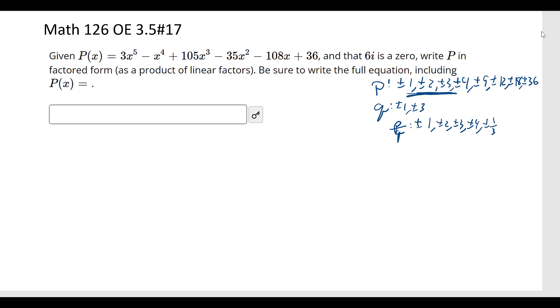1 third, 2 thirds, 3 thirds is 1 we already have that. And 12 thirds is 4, we already have that. 18 thirds is 6, I totally missed 6, plus or minus 6.